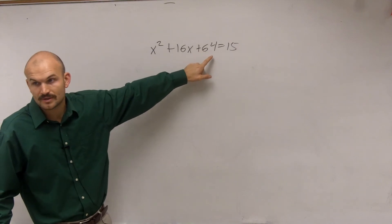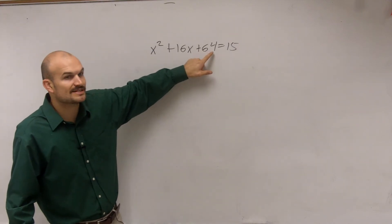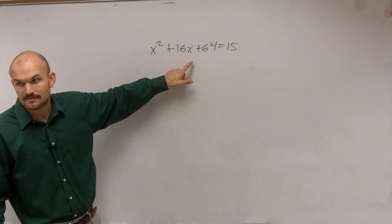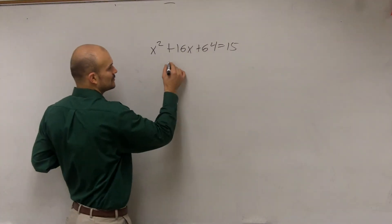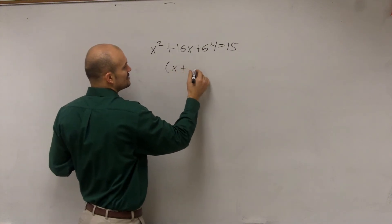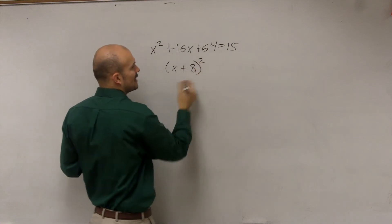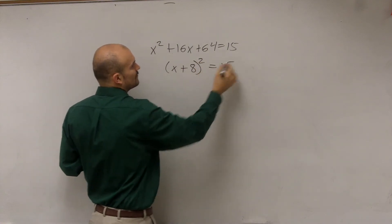64, that's a square number, right? Square number, that's really 8 squared. Does 8 plus 8 give me 16? Yeah. So I can factor this really quickly and just say it's x plus 8 times x plus 8, right? Or I can just write x plus 8 squared equals 15.